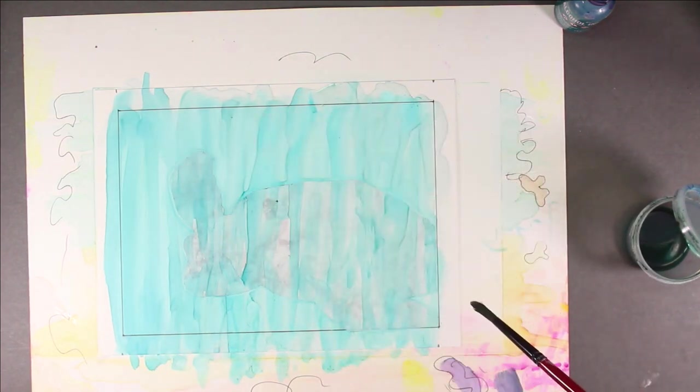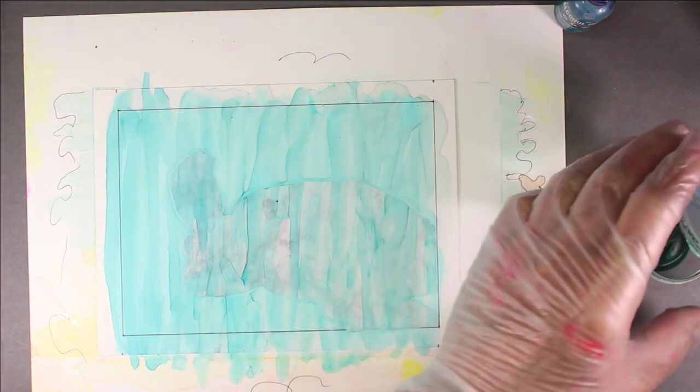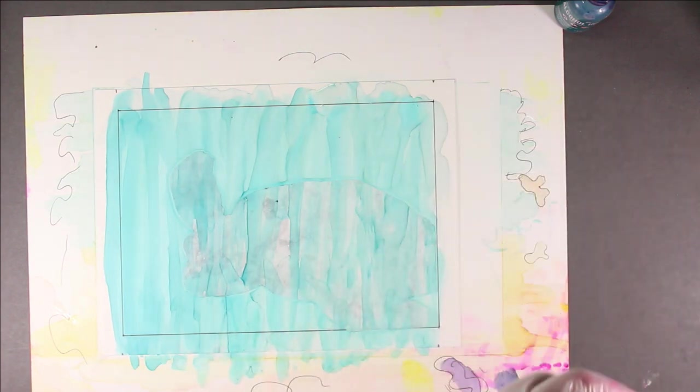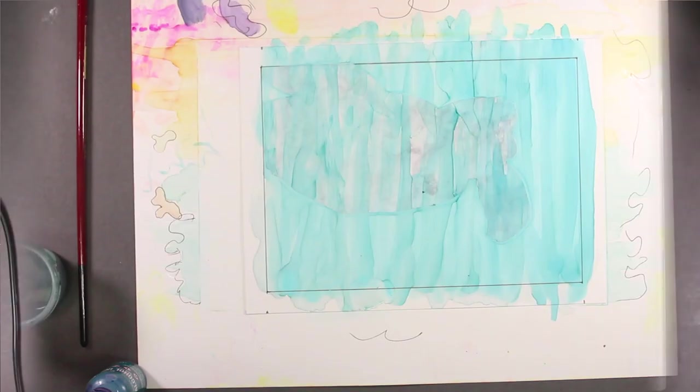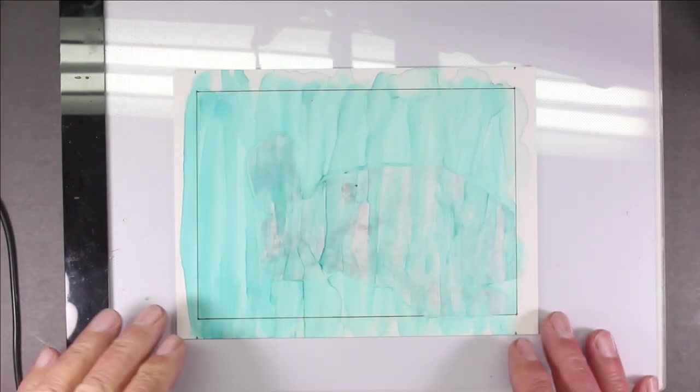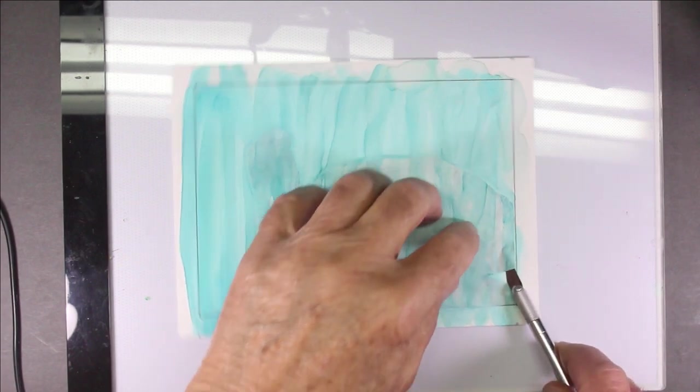Now we'll let the alcohol ink dry before removing the contact paper. My alcohol ink has dried so I will now remove the contact paper.